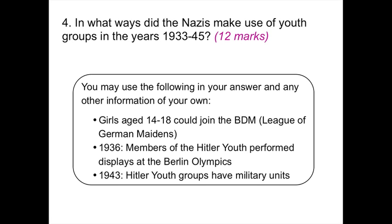We're going to have a look at question four now. The question was: in what ways did the Nazis make use of youth groups in the years 1933 to 1945? Again, it's a 12 mark question and you've been given bullet points. You can ignore them, or you can make use of them to expand upon in your evidence, but they are only a suggestion — they can be ignored.